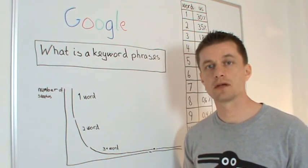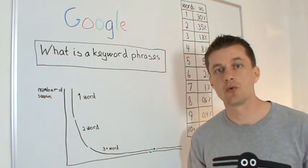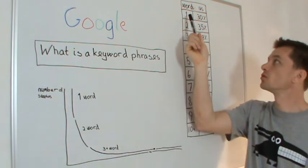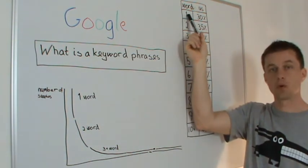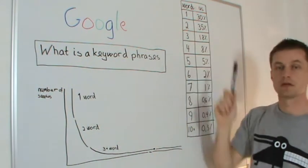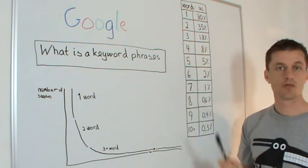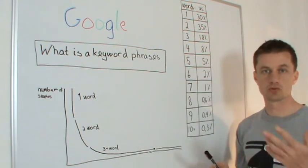If you look at the biggest market, the US, you'll see that searches using just one word account for 30% of the time. Two words: 35%—so this is the most popular, to use two words.